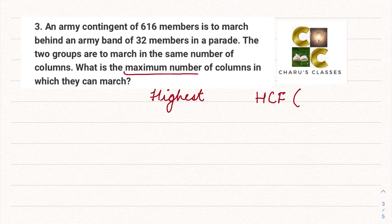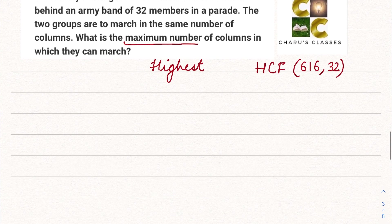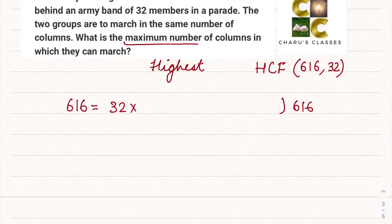So we have to find HCF of 616 and 32. So we are going to use the Euclid division algorithm. So we can write 616 as 32 multiplied by what? So let's check after dividing. 32 twos are more than 61. So we will write 31 ones are 32, ones are 32.